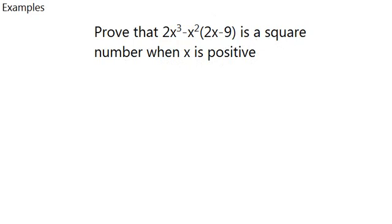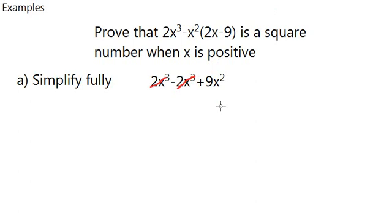First thing to do is to simplify fully the original equation, which is 2x cubed minus x squared times 2x minus 9 and that would result in 2x cubed minus 2x cubed plus 9x squared. And as we know, these two are the same, so they cancel out each other and we are left with 9x squared. So now what to do?